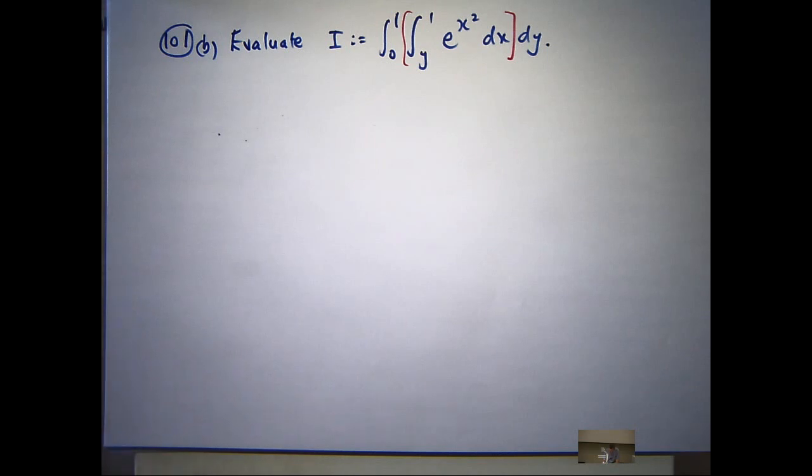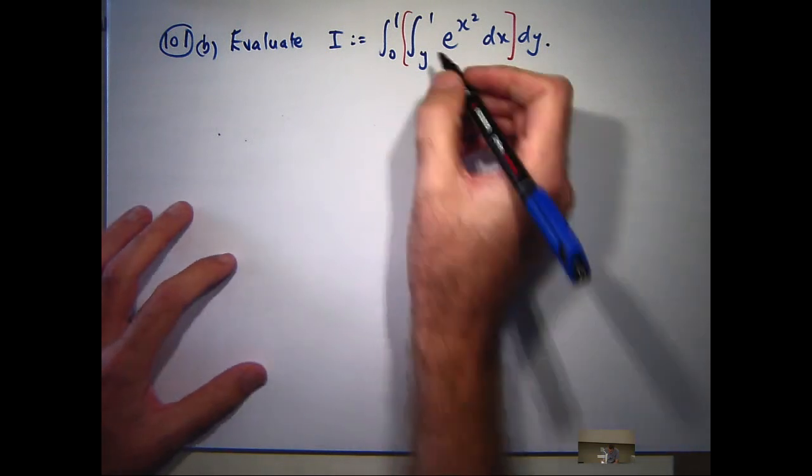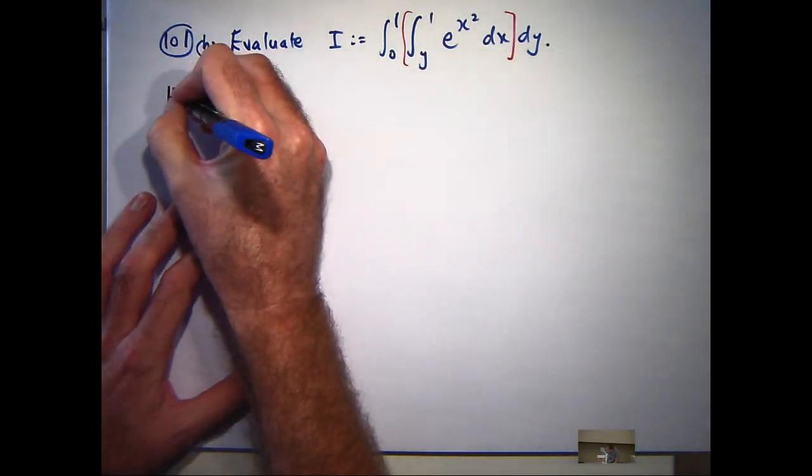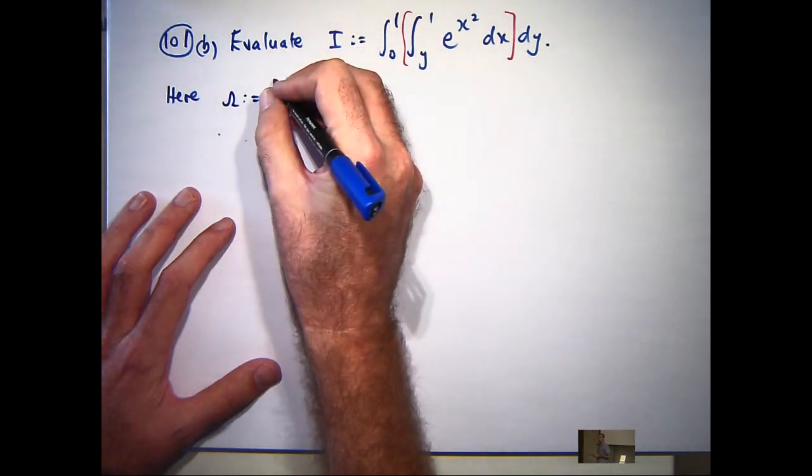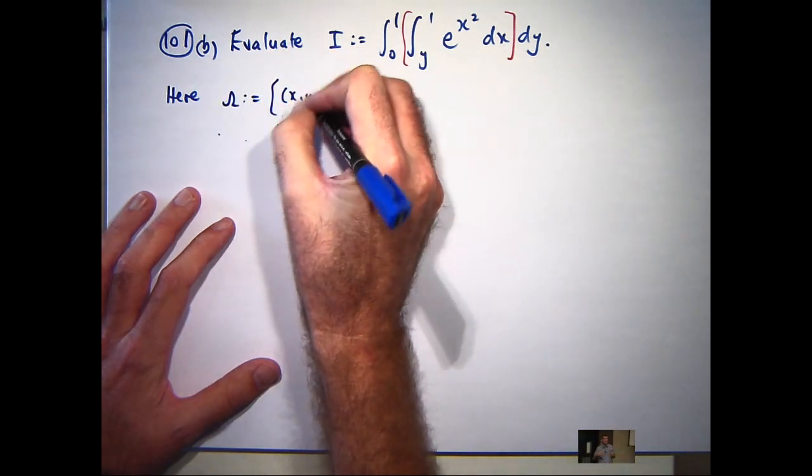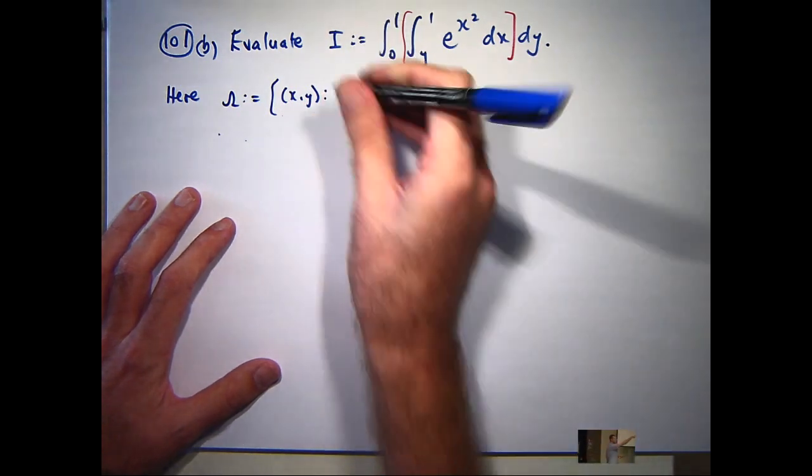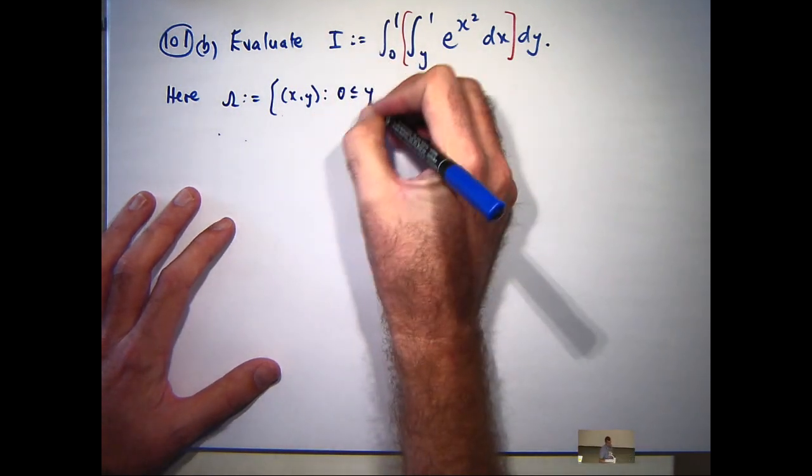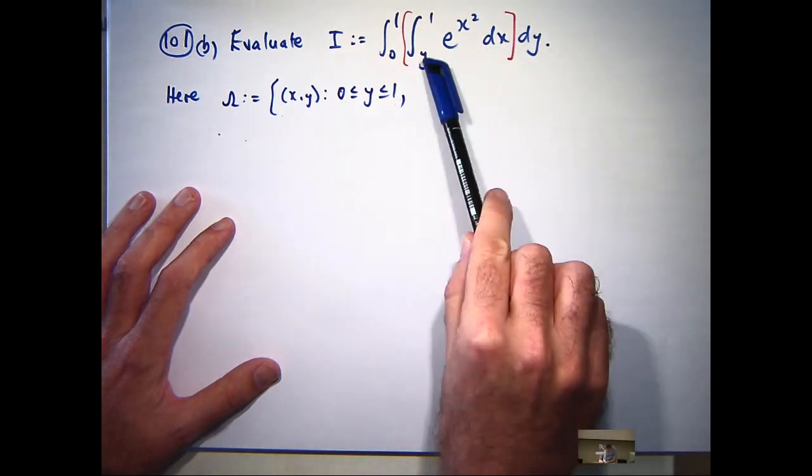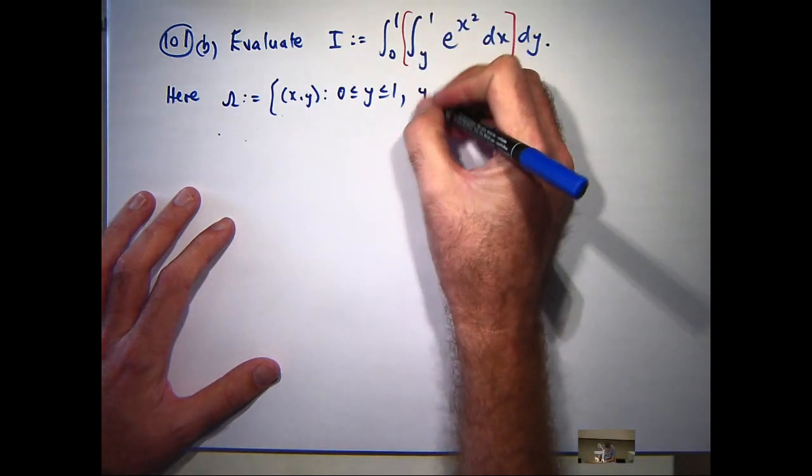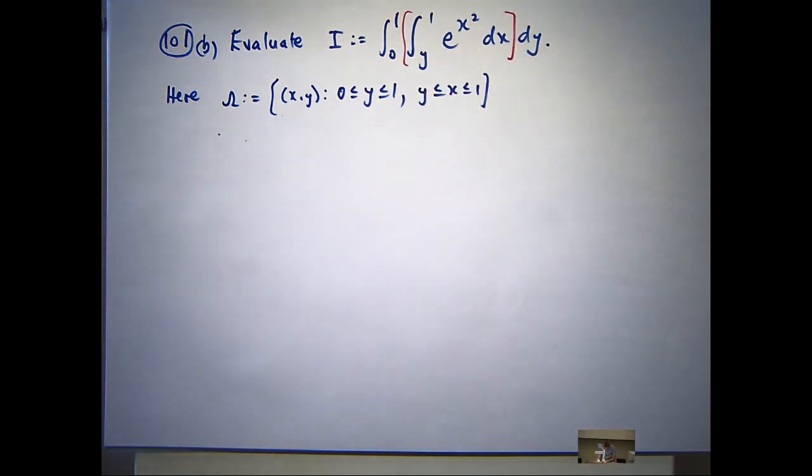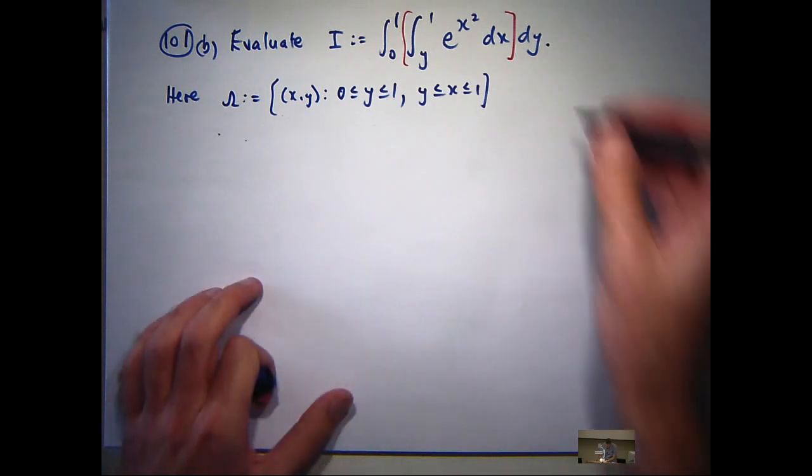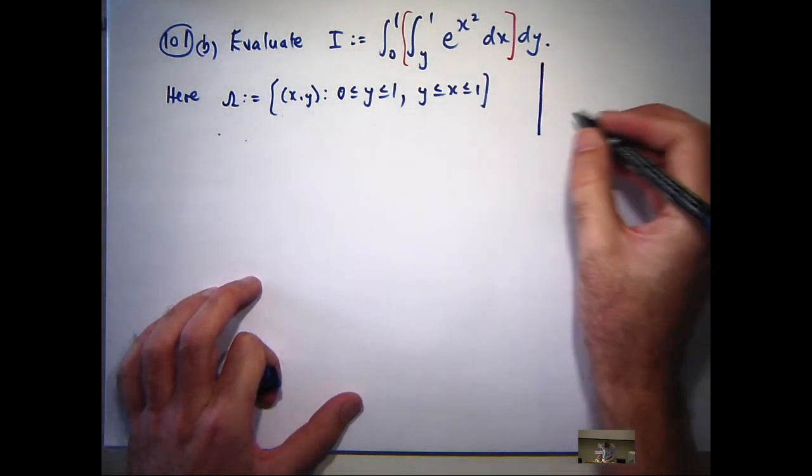Now, for that, we need to firstly draw a picture. So let's try to work out what our region of integration is. Well, omega is just, y is between 0 and 1, and x is between y and 1. So let's draw a little picture and see if we can work out what's going on.